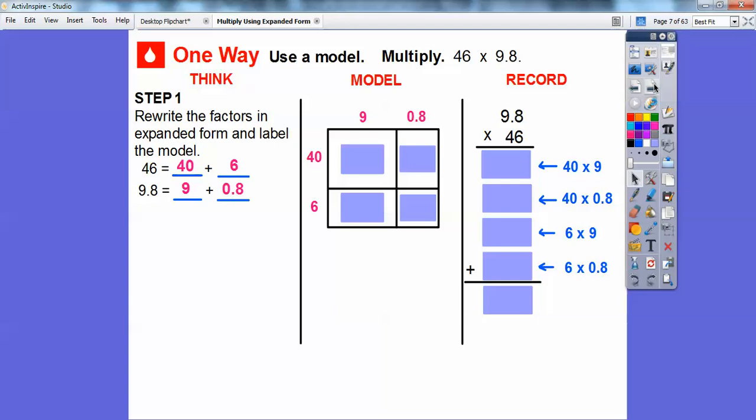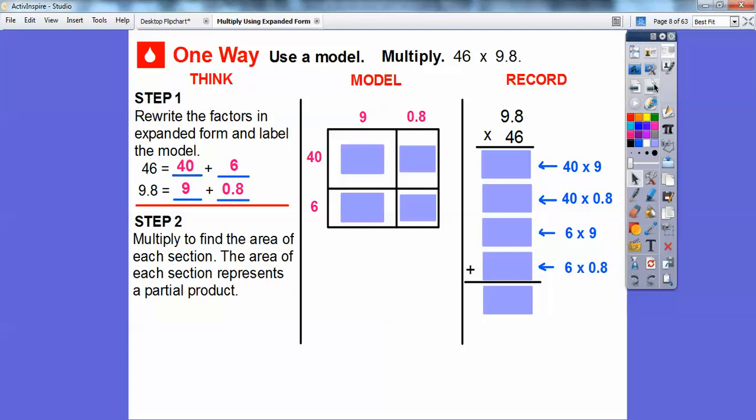So in this model now, we can go ahead and multiply to find the areas of each section. Remember, the area of a rectangle is just length times width or base times height. So let's go ahead and do this right here. So 4 times 9 is 36. So 40 times 9 is 360. I left a space right there because this decimal is probably going to get one of the decimals either on this one or this one right here or maybe both right there.